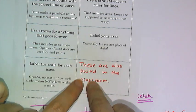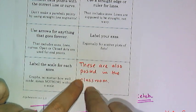Remember, these are posted in the classroom, so during a test or quiz, if you want to make sure you're graphing right, you can just turn your head and look at the criteria that are posted on the wall.